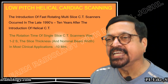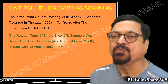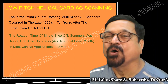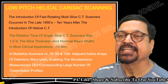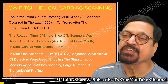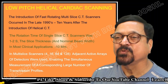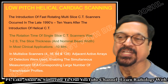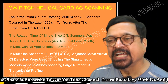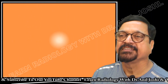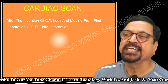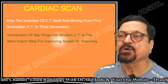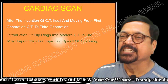The rotation time of a single-slice CT scanner was 1 to 2 seconds, with slice thickness of around 1 mm or less. Almost the entire body was covered in a single breath — less than 1 second to 1.5 seconds. In multi-slice scanners — 4, 16, 64, 128 — adjacent active arrays of detectors are used, enabling simultaneous measurement of a large number of transmission profiles. Cardiac scanning moved from first generation CT to third generation faster. Introduction of slip rings into modern CT scanners was the most important step for improving scanning speed.